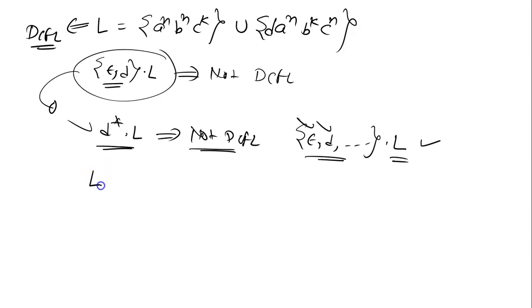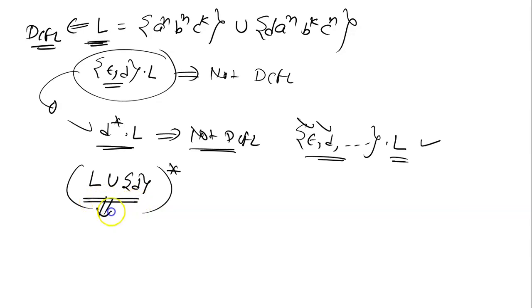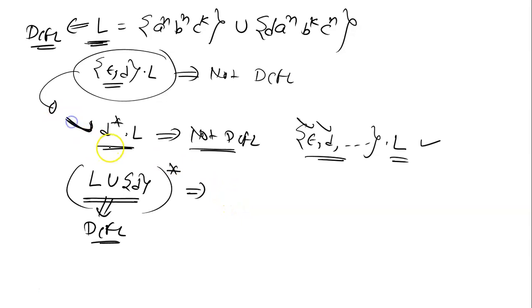Now consider one more variation. In language L, I add the string d: so take L union {d}, and then apply Kleene star to get (L ∪ {d})*. Note that L ∪ {d} is still a DCFL — we are just adding one more string d to L, which doesn't change that it's DCFL. The question is: is (L ∪ {d})* also DCFL?